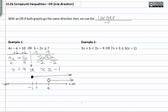At this point we have to determine which line covers more area. Remember, with an OR if both graphs go the same direction, then we use the larger one. So we're going to go from -1 to positive infinity as our interval.